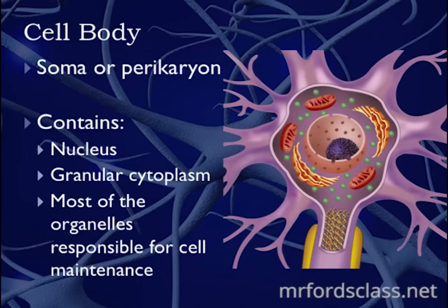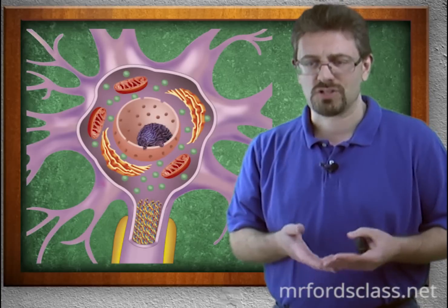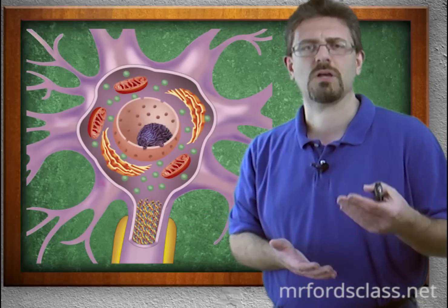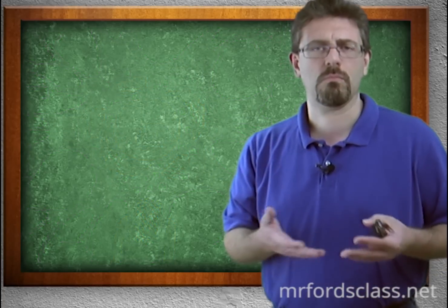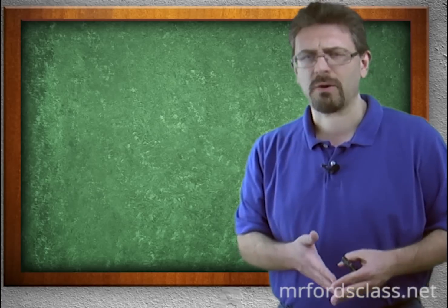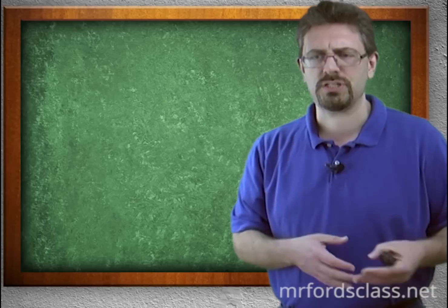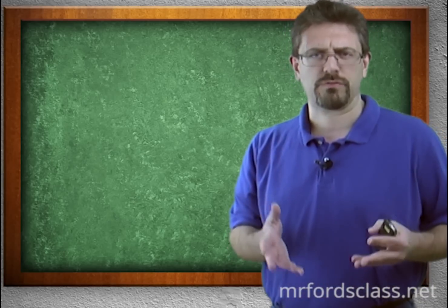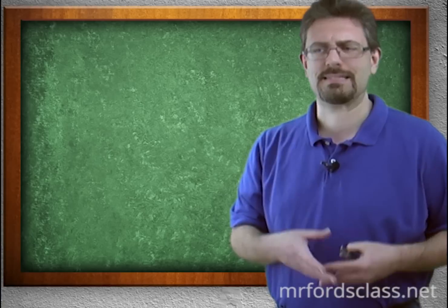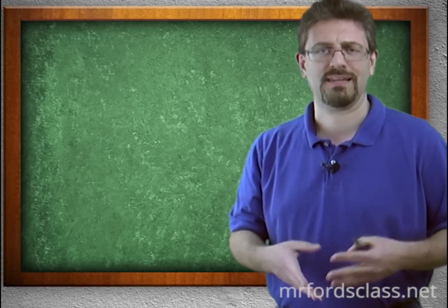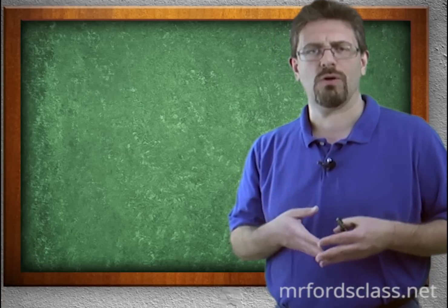The cell body contains the nucleus, the granular cytoplasm, and most of the organelles responsible for cell maintenance. A cell body is just like a cell from your other studies — it has a nucleus, nucleolus, rough ER, smooth ER, Golgi apparatus, mitochondria, and vesicles. The cell body of a neuron is the command center, the central location, and you'll find many of the organelles present in a normal cell within a neuron's cell body.